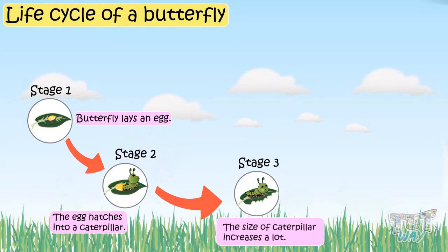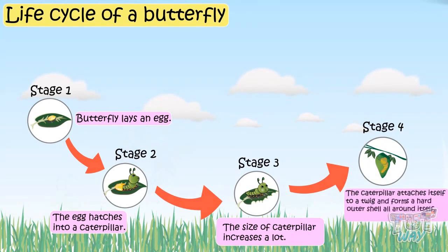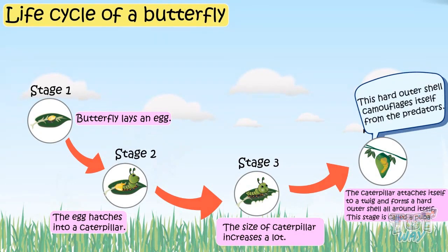The size of the caterpillar increases a lot — this is the third stage of a butterfly's life cycle. Now comes the fourth stage: the caterpillar attaches itself to a twig and forms a hard outer shell all around itself, and this is then called a pupa.